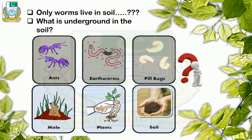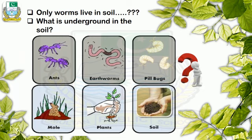Here we have some questions whose answers you have to find. Do only worms live in soil? What is underground in the soil? Many living things exist under the ground — like ants, earthworms, pill bugs, moles, and roots of plants. How do they survive under the soil? Without air, no living thing can survive. So can you say that there is air under the soil? If it's true, we have to prove it.